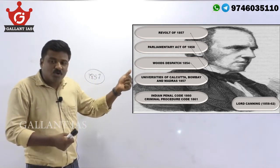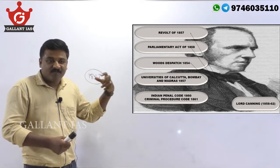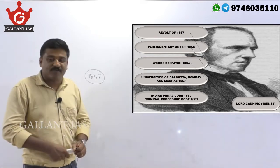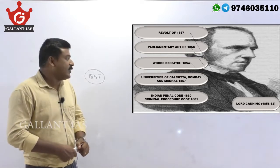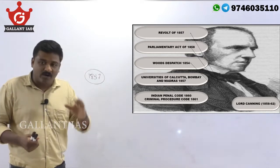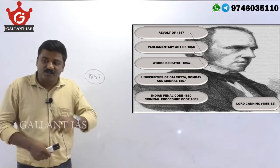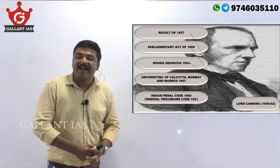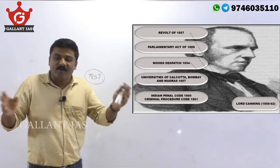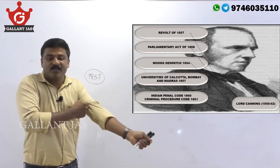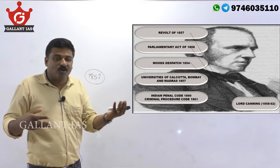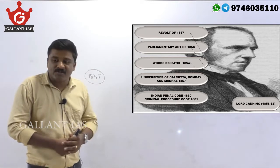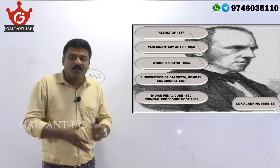Also during Lord Canning's tenure: Wood's Dispatch of 1854, the Magna Carta of English Education in India, which proposed female education, primary education, mass education, vernacular education, and a three-tier structure of education. Universities of Kolkata, Bombay, and Madras were established on European lines. The Indian Penal Code 1860 was drafted under the first law commission chaired by Lord Macaulay, and the Criminal Procedure Code 1861 was also enacted.